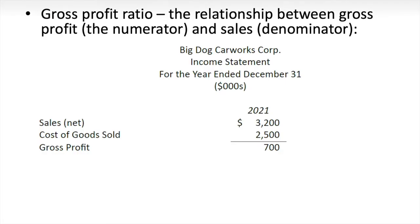Our first set of financial ratios deals with profits — the difference between revenue taken in and expenses taken out. For a company that sells goods, we can determine gross profit by taking net sales minus cost of goods sold. Revenues minus expenses equals gross profit. It's simple arithmetic at this point.